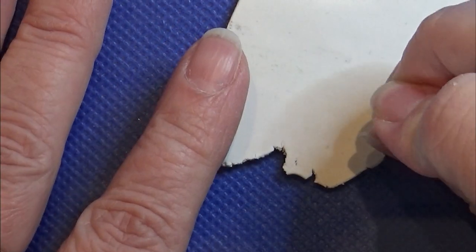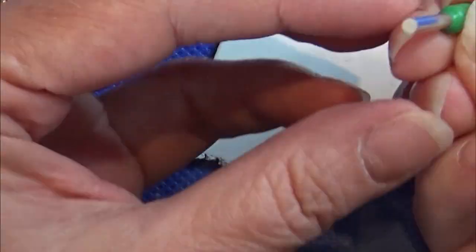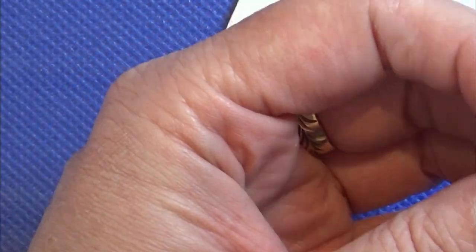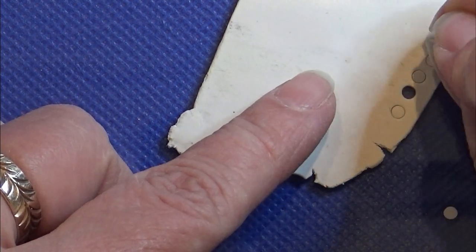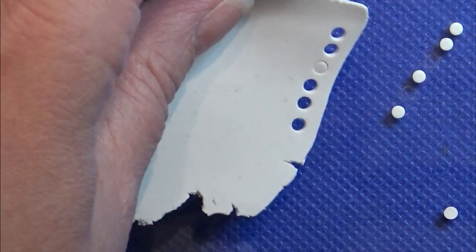Now for the spool of sewing thread, I rolled out a piece of clay on a setting 6 and I'm taking my small hole cutter and I'm cutting out these small rings.